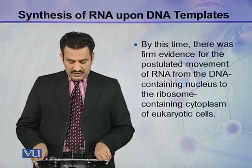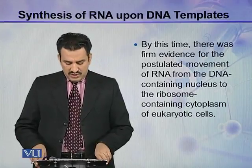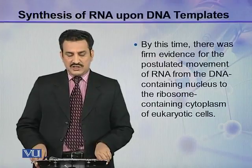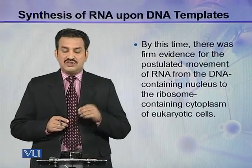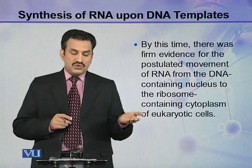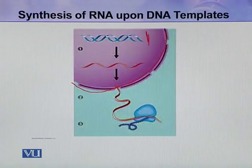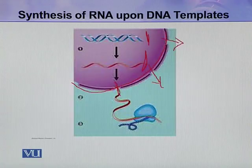By this time there was firm evidence for the postulated movement of RNA from the DNA-containing nucleus to the ribosome-containing cytoplasm of eukaryotic cells. It was established that mRNA is synthesized in the nucleus, which contains DNA, and then moves out into the cytoplasm, which contains ribosomes. The mRNA exits the nucleus through nuclear pores and then attaches to ribosomes for the synthesis of proteins.